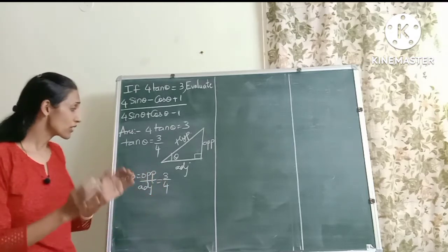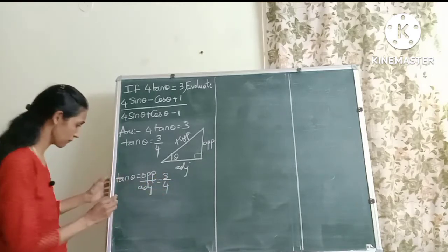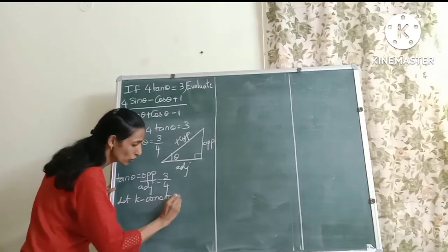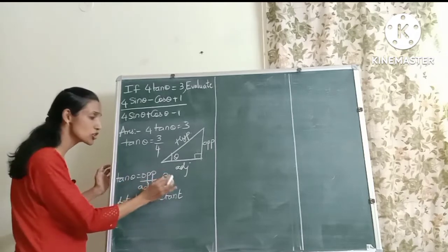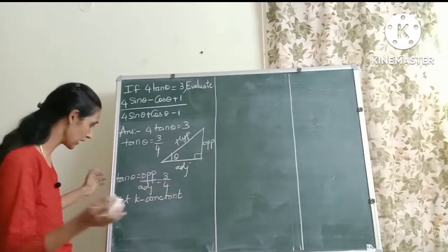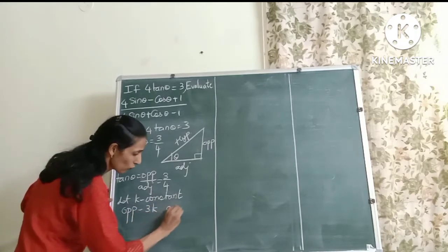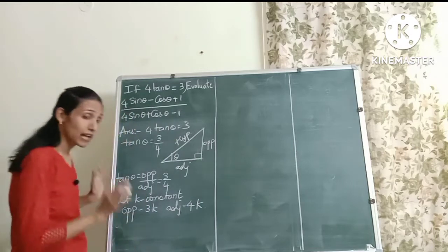Now we want to know the actual value of the opposite side and the adjacent side. So friends, let's multiply each of these numbers by a constant k. So let k be a constant. So whenever you want to convert ratio into actual numbers, always multiply the individual numbers by any constant k. So my opposite side will become 3k and what will be my adjacent side? Yes, it will be 4k.